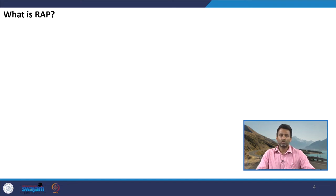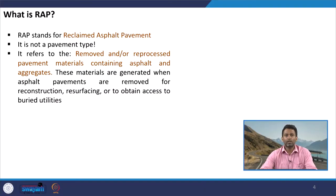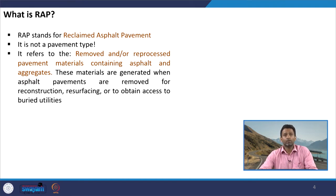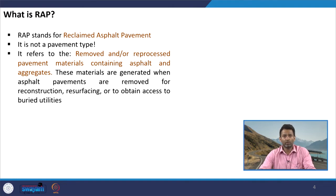When I say hot recycled mixtures, I am talking about something popularly termed as RAP. RAP stands for Reclaimed Asphalt Pavement. It is not a pavement type as the name might indicate; rather it refers to removed and reprocessed pavement materials containing asphalt and aggregates. These materials are generated when existing asphalt pavements in service are removed, perhaps for reconstruction, resurfacing, or to obtain access to buried utilities.